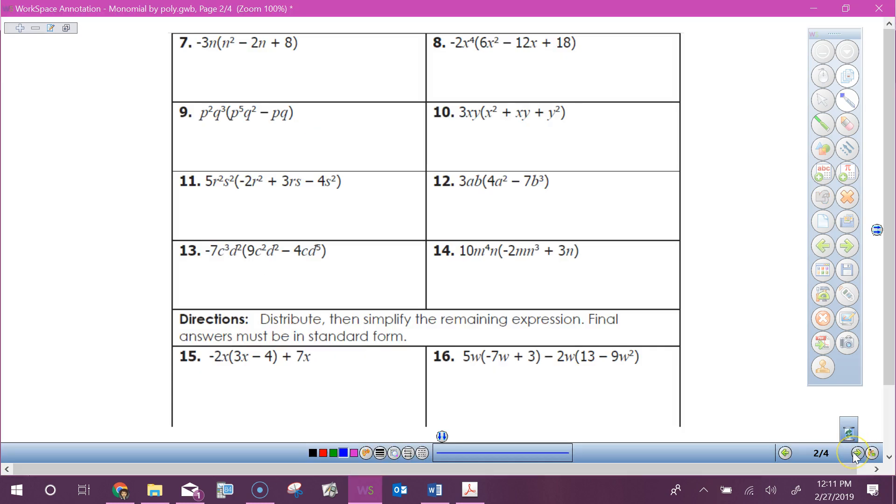Look at number nine. I've got p squared q cubed and p to the fifth q squared. Multiply your p's and then multiply your q's. So p squared times p to the fifth gives me p to the seventh, q to the fifth, minus p to the third and q to the fourth.